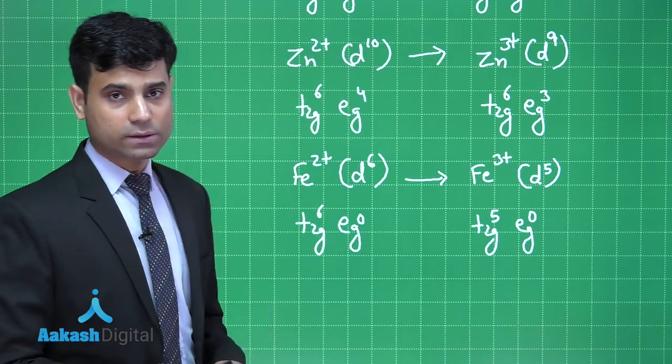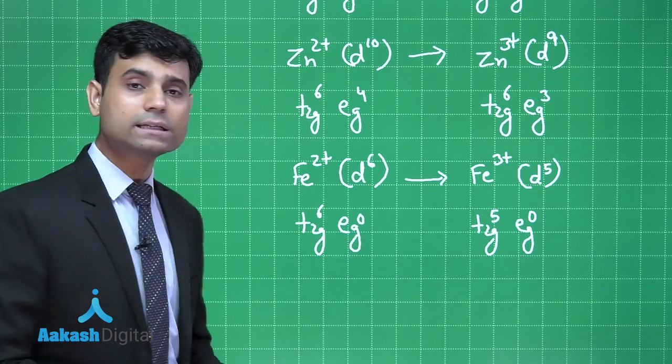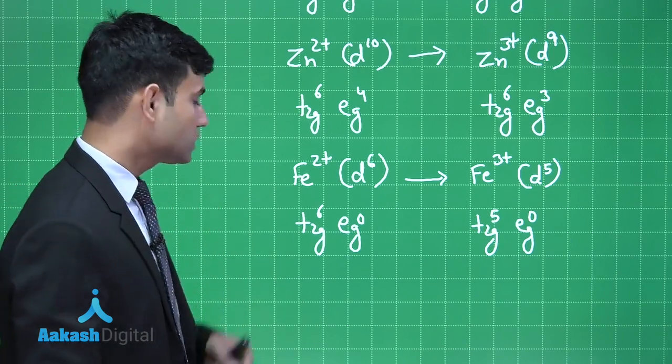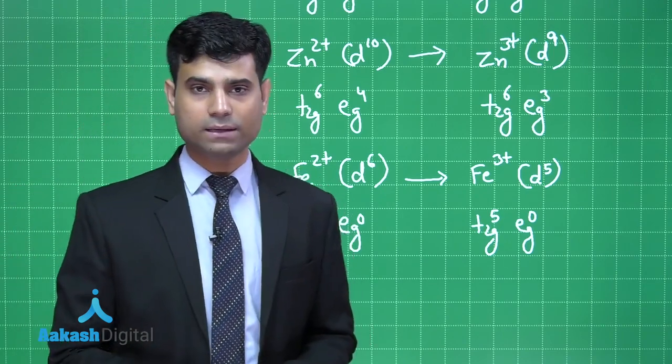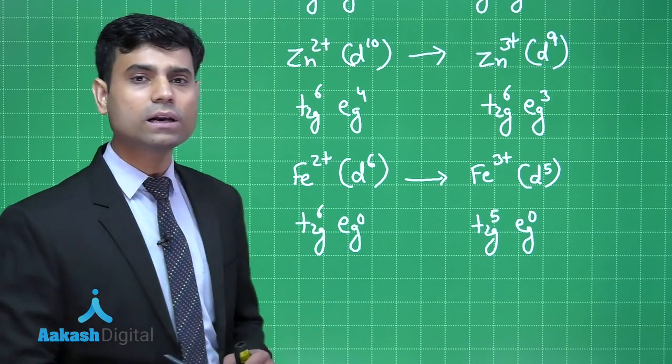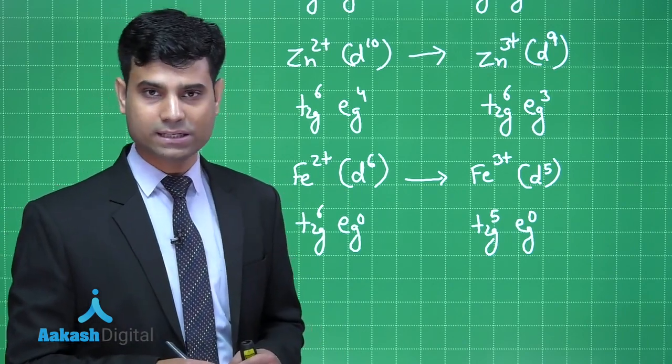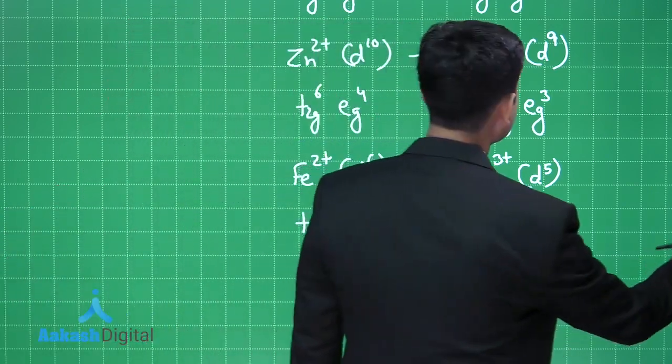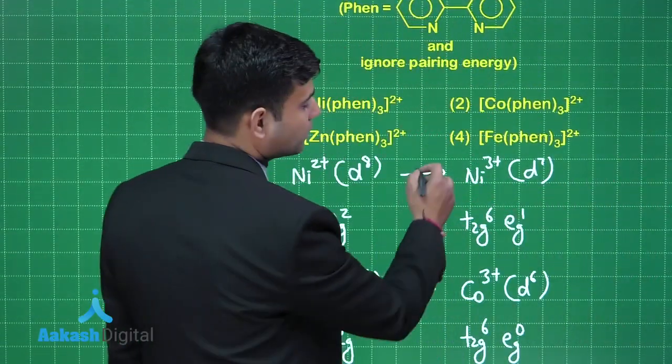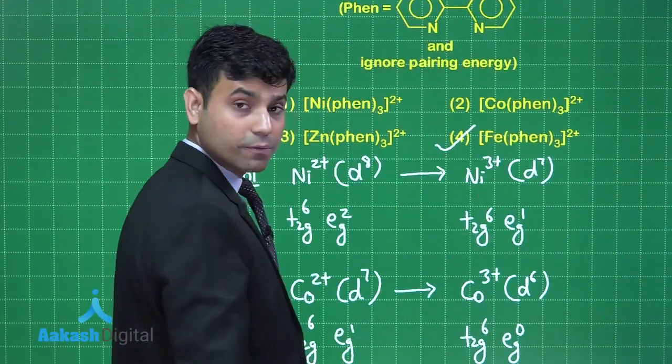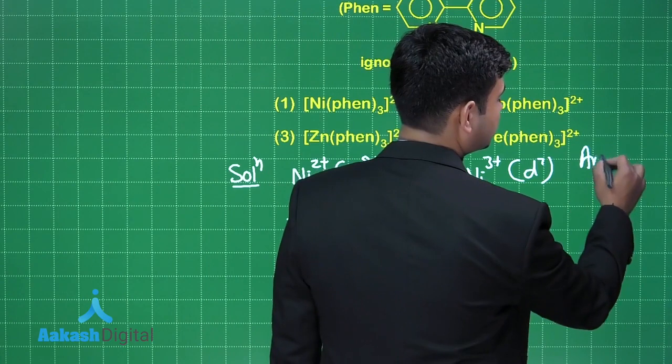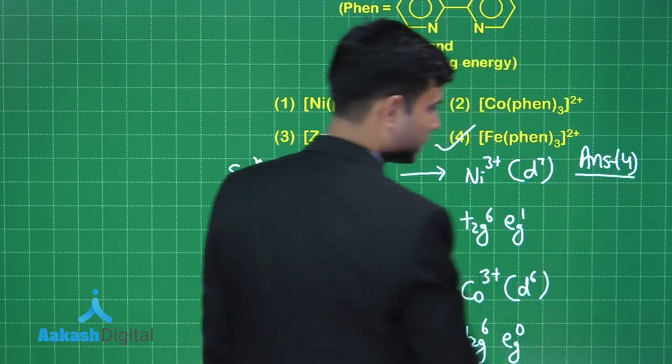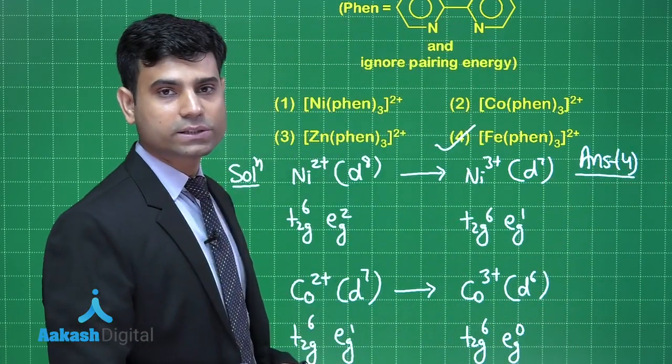Now out of the given options, only in option 4, that is Fe2+, we are losing electron from t2g orbital. Therefore in this case only we are losing the stabilization energy. So the correct answer for this question will be option 4, which is a complex of iron. Now let's move to the next question.